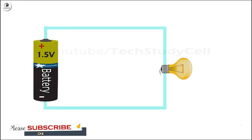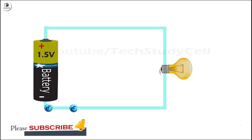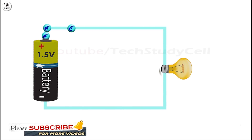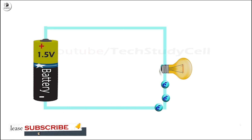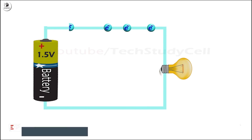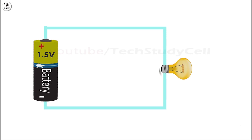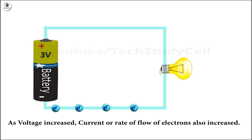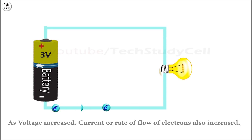Now, here you can see I have connected a battery with a bulb. You can see the electron is flowing from the negative terminal of the battery to the positive terminal through the bulb, and as the electron is flowing through it, it is emitting light. Now, if I increase the voltage of the battery, the rate of flow of the electrons will be increased through the bulb, and it will emit brighter light.